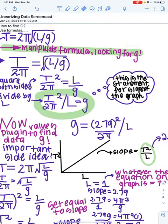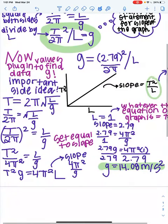And to do this, we have to first find the slope, and the slope is equal to 2π, or sorry, the period squared over L.